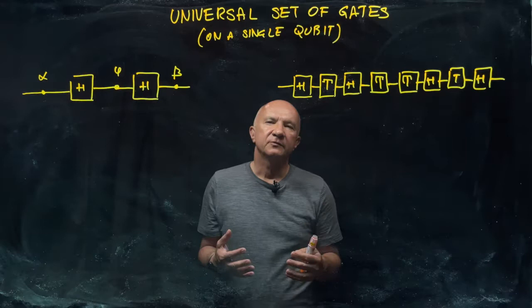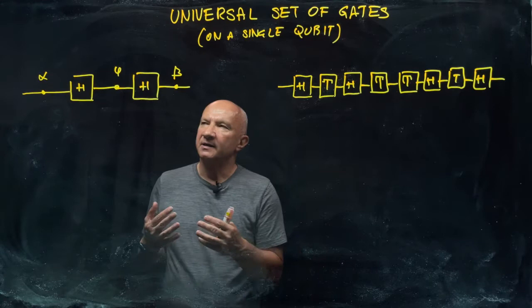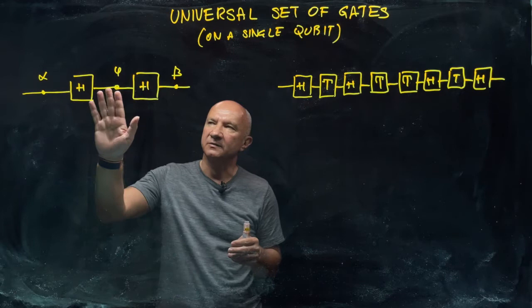Suppose we want to implement any unitary operation on a single qubit. You know that we can do it using only two types of gates: the phase gate and the Hadamard gate.